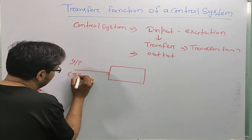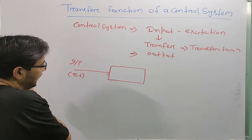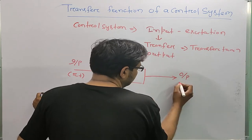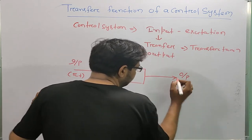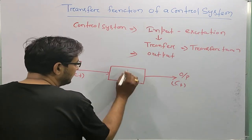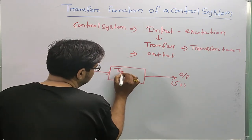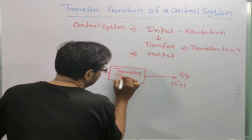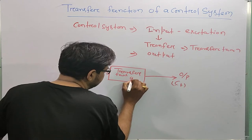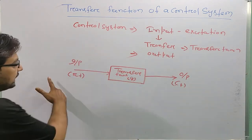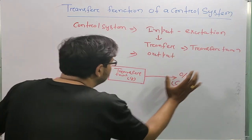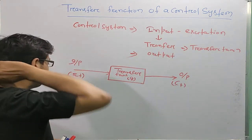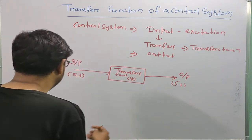In the block diagram, my input is r(t) and there is an output c(t), and there is a transfer function G. The input and the output of my control system are related to the transfer function. Let's look at this mathematically.